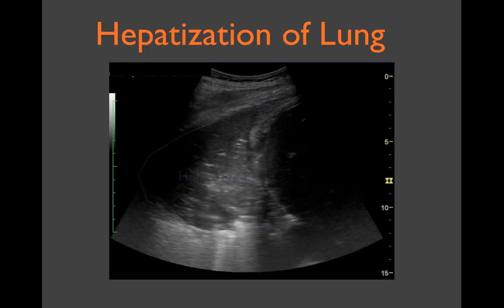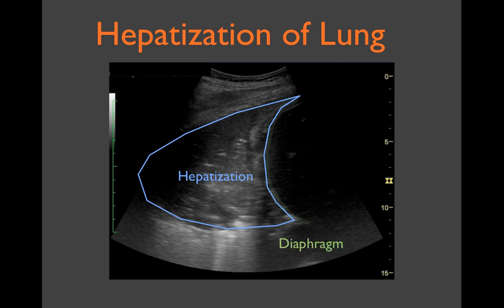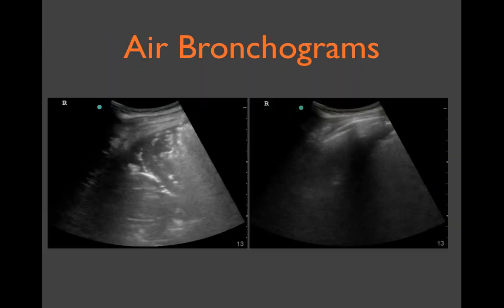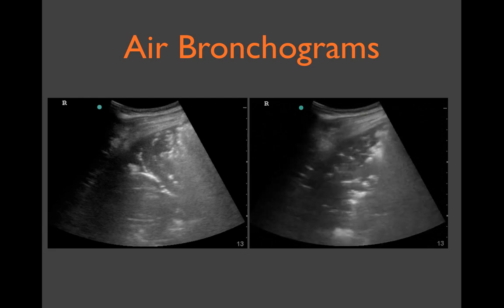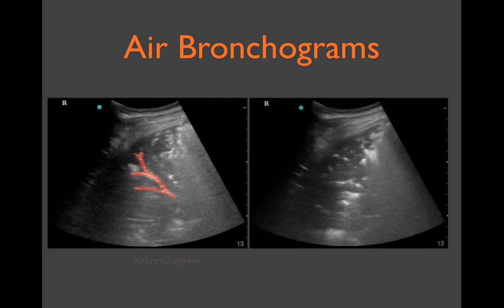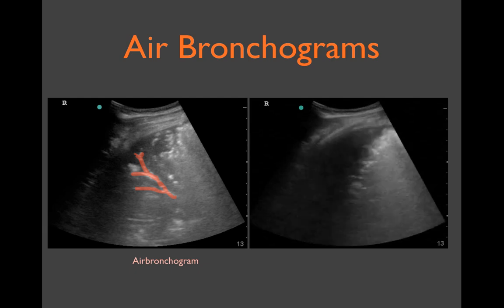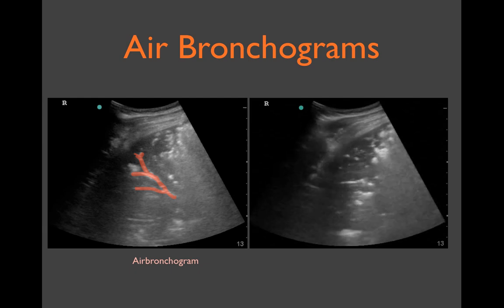What you see in the study of pneumonia is the deaerated lung parenchyma, which takes on an appearance similar to liver. This is sometimes described as hepatization. Here we see a large consolidation in the right lung base abutting the diaphragm. We also see numerous hyperechoic punctate specks and branching lines within the consolidation.